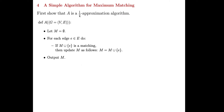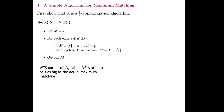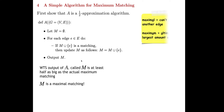To show it is a one-half approximation algorithm, we want to show that the output of A — the matching M — is at least half as big as the actual maximum matching. By analyzing the algorithm and noticing how it keeps adding edges until it can no longer do so, the output M that A produces is actually a maximal matching. A maximal matching is one where you cannot add any other edge without violating the matching property.